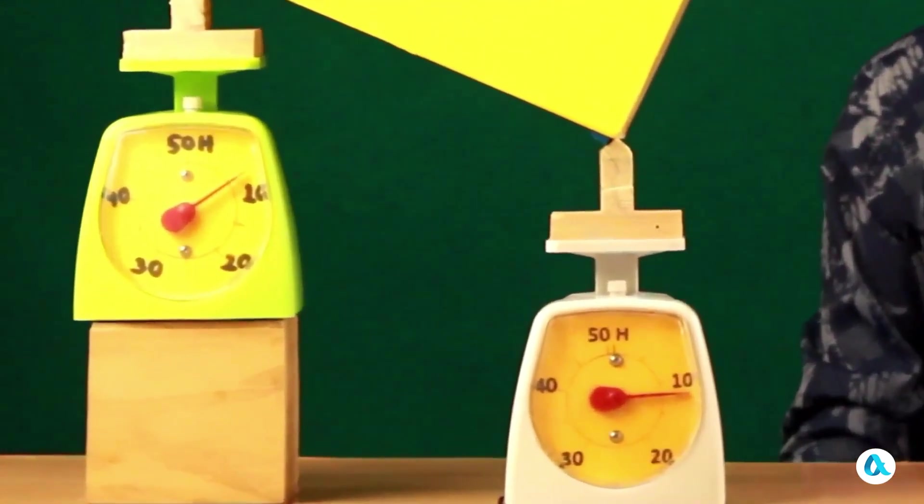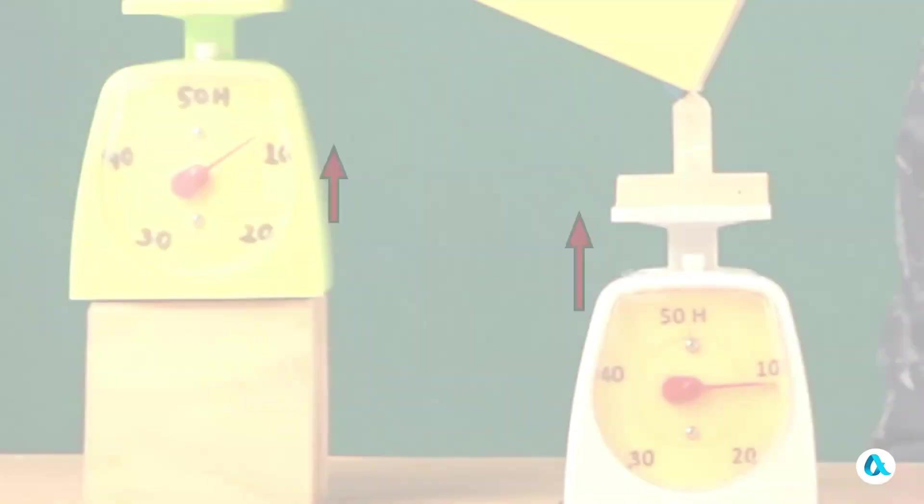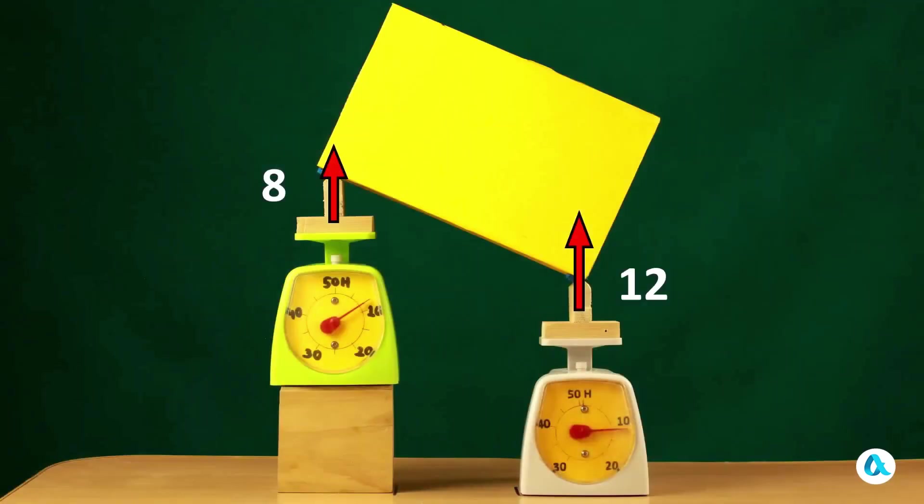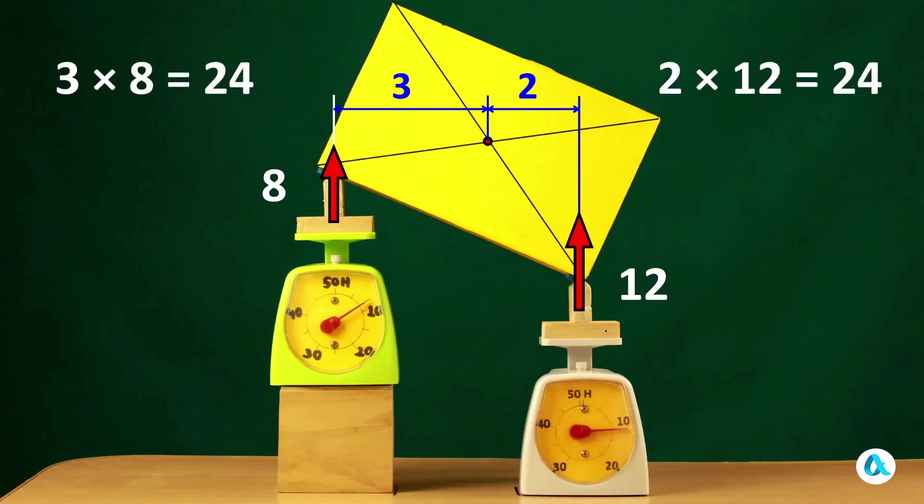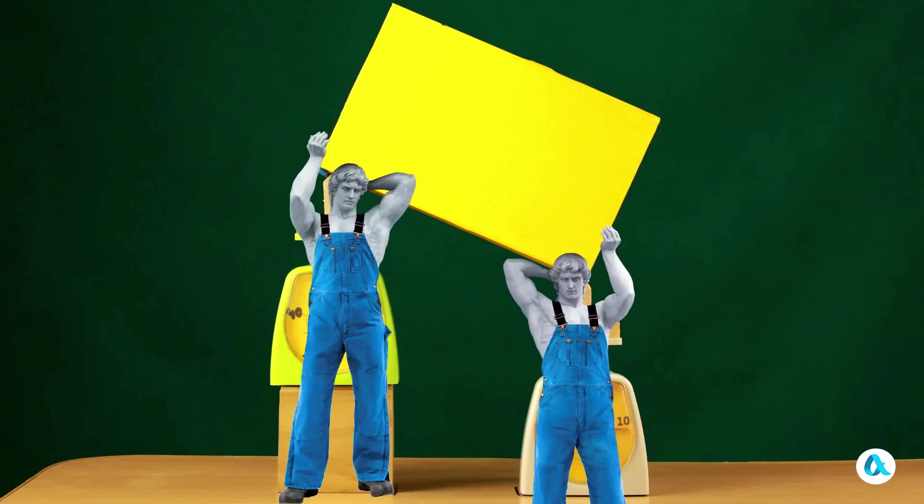The lower mover bears 12 newtons, that is 10 plus 2 newtons. While the upper one bears 8, that is 10 minus 2 newtons. Now let's look at the torques these forces create relative to the center of mass. Their lever arms are in a ratio of 3 to 2. The moment on the left is 3 times 8, and the moment on the right is 2 times 12. They are equal to each other, just as school physics predicts. That's why it's harder to hold the cabinet from below than from above.